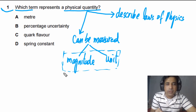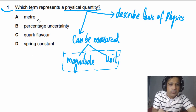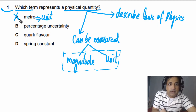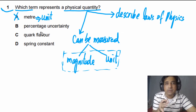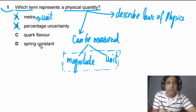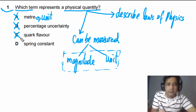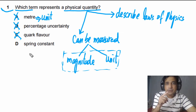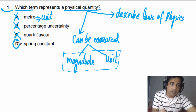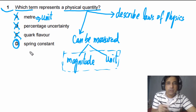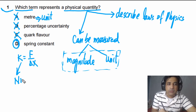Using our understanding of physical quantities, we can identify the correct answer. Option A is just a unit, so it is not a physical quantity. Percentage uncertainty is also not a physical quantity. Quark flavor — meaning type of quark like up or down — is also not a physical quantity. The spring constant is a physical quantity: it has magnitude and a unit. K = F / Δx, and the unit of K is newtons per metre. So the correct answer is the spring constant.